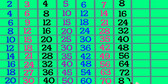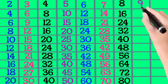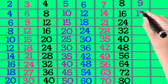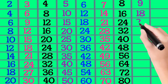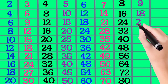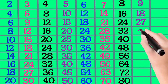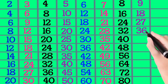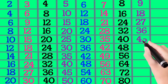9×1 is 9, 9×2 is 18, 9×3 is 27, 9×4 is 36, 9×5 is 45.